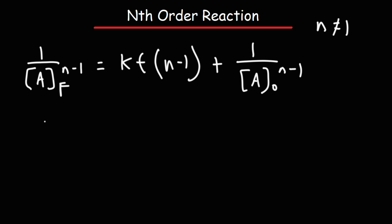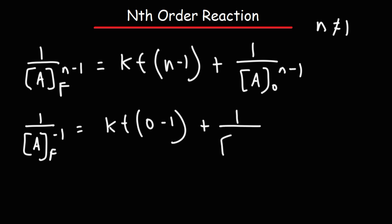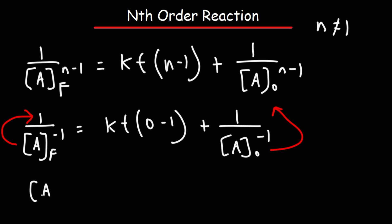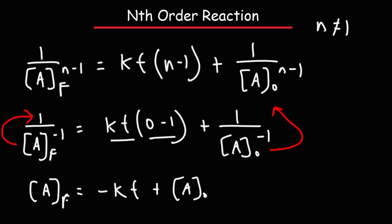When n is 0, for a zero-order reaction, the exponent becomes 0 minus 1, which is negative 1. Because the exponent is negative, we can move a to the top and it becomes positive 1 — so this becomes a_final. The kt term becomes negative kt, and the last term becomes plus a_initial. If you look at the integrated rate law video, you'll see this is indeed the integrated rate law for a zero-order reaction. You can find all those formulas in the formula sheet below, and I'll also post links to example problems on how to use these formulas.